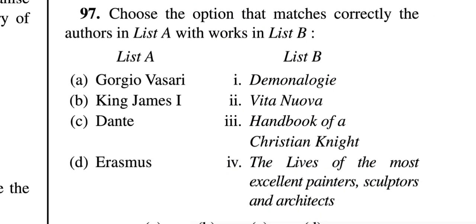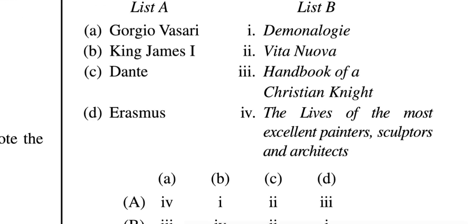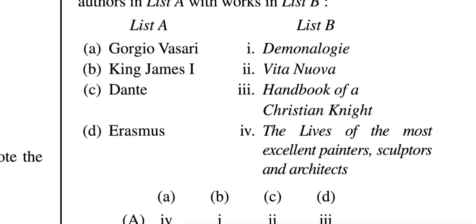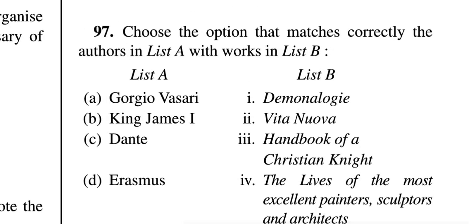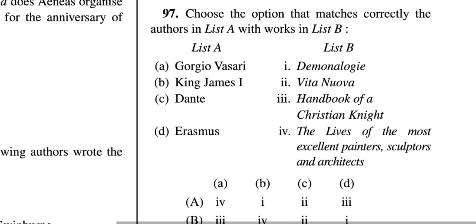Question 97: Choose the option that matches correctly the authors in list A with works in list B. List A: Giorgio Vasari, King James I, Dante, Erasmus. The correct answer is A: Vasari — Lives of the Most Excellent Painters, Sculptors, and Architects; King James I — Demonology; Dante — Vita Nova; Erasmus — Handbook of a Christian Knight.